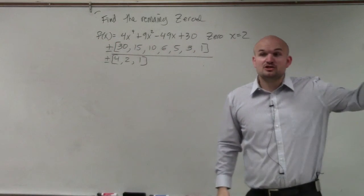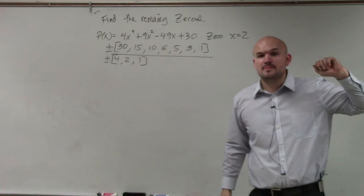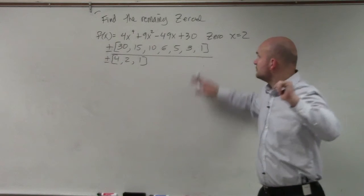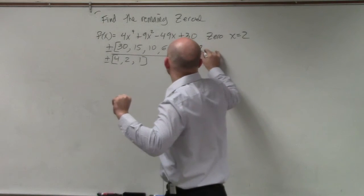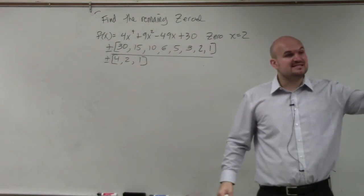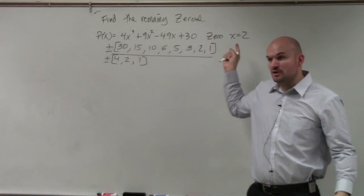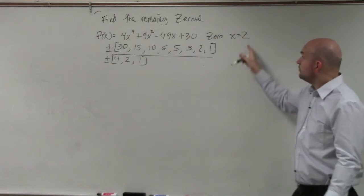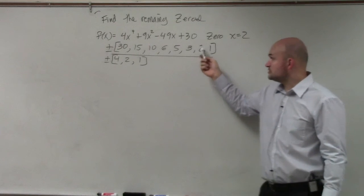Now, they're telling us 2 is a zero. 4, 3, 2, 1. Thank you. Now, they say 2 is a zero. Is 2 one of our rational zeros? Well, yes, plus 2 over 1, right?